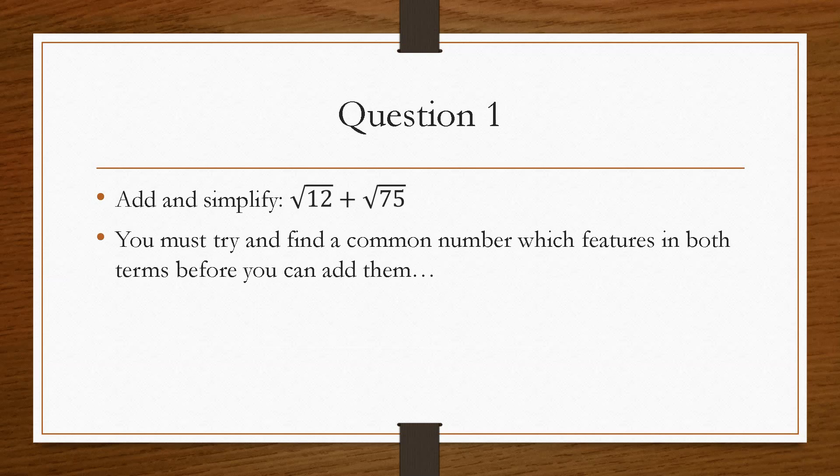So we need to find a number which features in both of these, and also incorporates one of the values that we've seen in the table previously. So the numbers that I'm going to try is 4 times 3, which would give us the 12.